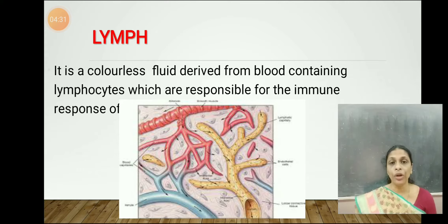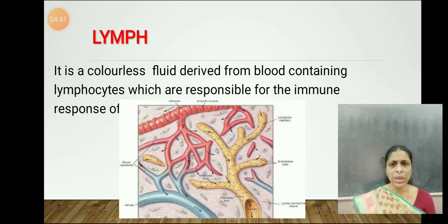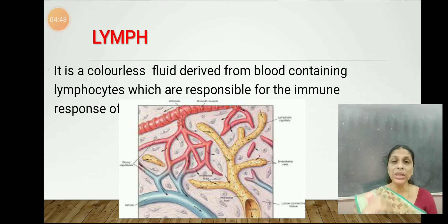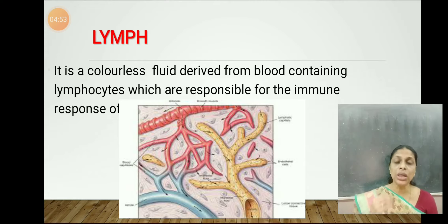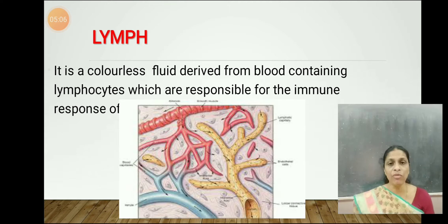Lymphocytes are responsible for the immune response of the body. What is immunity? The ability of the body to fight against disease-causing organisms is called immunity. Whenever a microorganism enters our body, our body reacts to that — that is called the immune response. This immunity is provided by the various types of WBCs, one major type of which is lymphocytes, found in both blood and lymph.